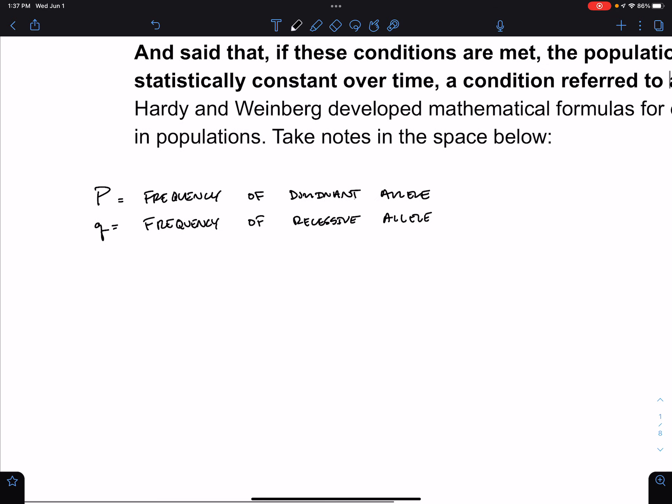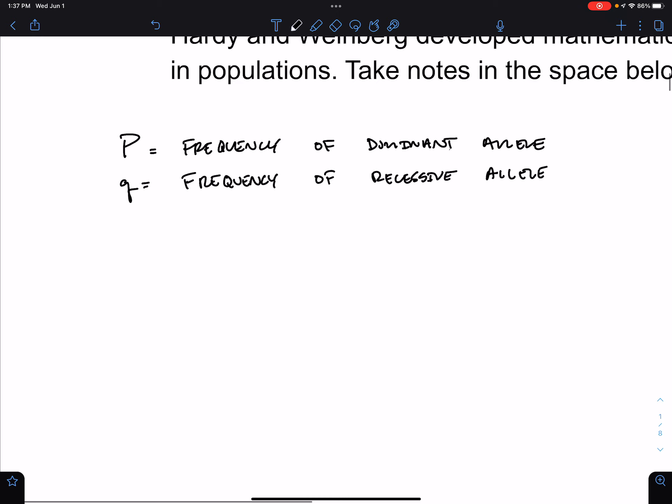The frequency is going to be a number, some number between 0 and 1. The total number of alleles in the population add up to equal 1. So the frequency of P plus the frequency of Q is going to equal 1.